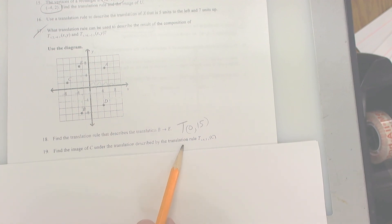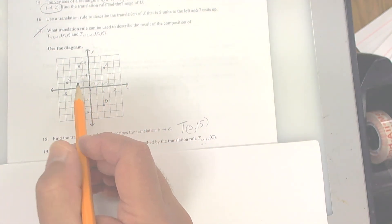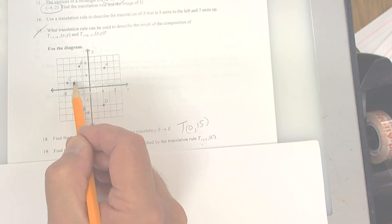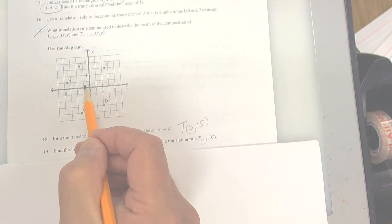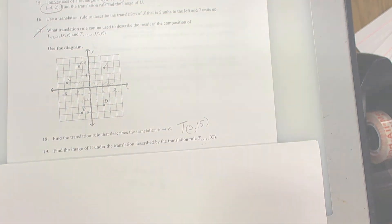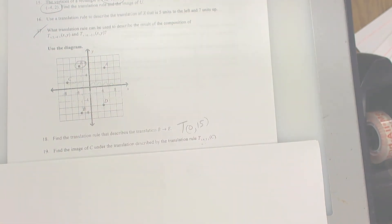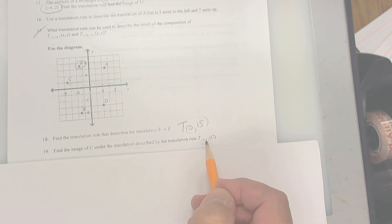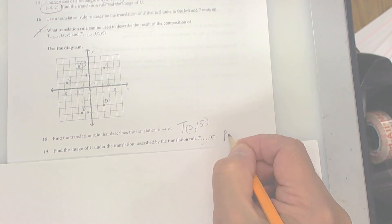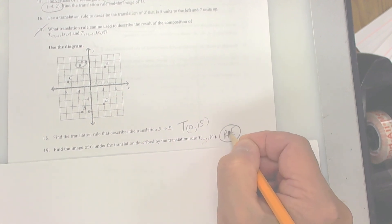Number 19: going from C under the translation over 4 and up 5. Here's C — remember each one is worth 2. So going over 4 and up 5 lands on point E. So point E is the answer for number 19.